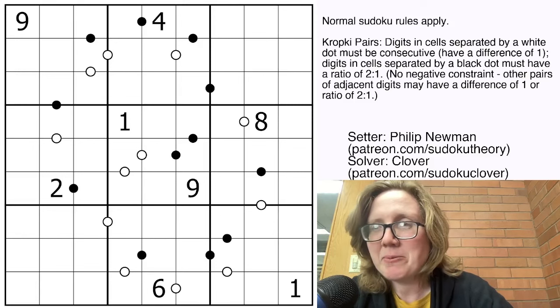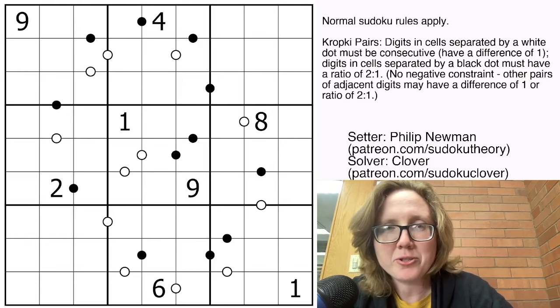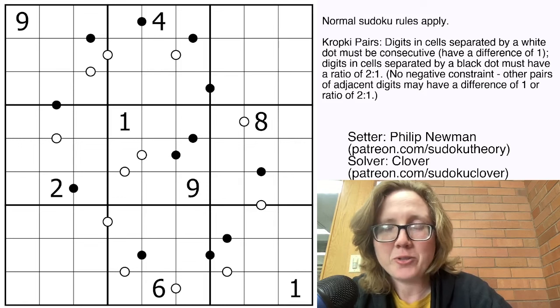Hello, I'm Clover, and today we're going to solve the gas puzzle originally posted by Philip Newman on March 21st, 2024. This is a Kropke pairs Sudoku, it's called Andromeda.